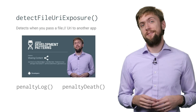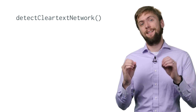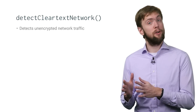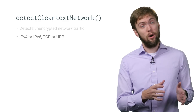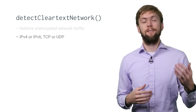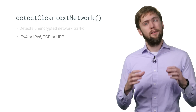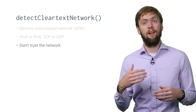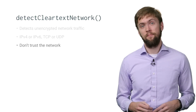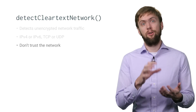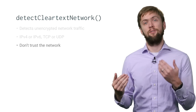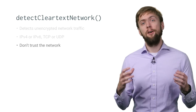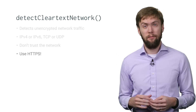New to Android 6.0 Marshmallow is detectCleartextNetwork. As you might expect from the name, this detects unencrypted network traffic over IPv4 or IPv6, whether using TCP or UDP. The thing about mobile devices out in the wild is that you can't really guarantee that they'll actually be connected to trustworthy access points. Risking the security of your users' data or the communication to your server is the last privacy nightmare you want to deal with on launch day. So detect it early and encrypt your network traffic.